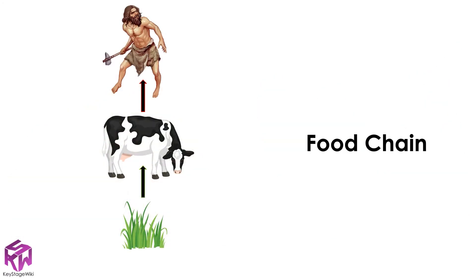In this food chain, we can see that grass is eaten by cows and that cows can be eaten by humans. A food chain is important because it shows us how living things rely on each other for food.